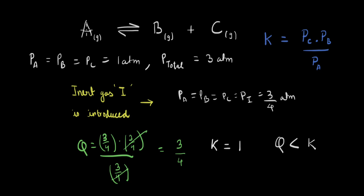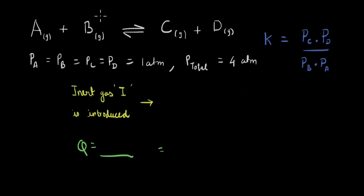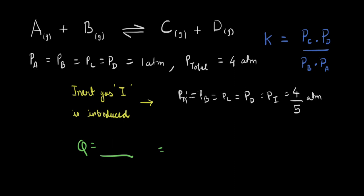In both of these cases, we did not have equal number of moles on the reactants and product side. Let's take one last example to see what happens when we have equal number of moles on both sides. We repeat the same exercise, but this time the reaction has equal number of moles on the reactant and product side. We assume initial partial pressures are all equal to 1 atm, so the total pressure is 4 atm. When we introduce an inert gas, we will have 5 gases in the mixture, and the partial pressure of each of them — including the inert gas — is assumed to be 4/5 atm. The sum of partial pressures is still 4 atm.